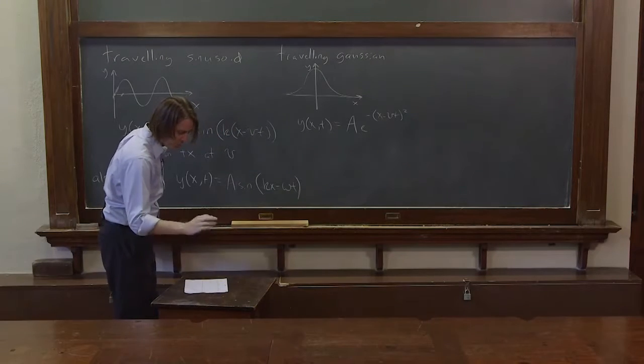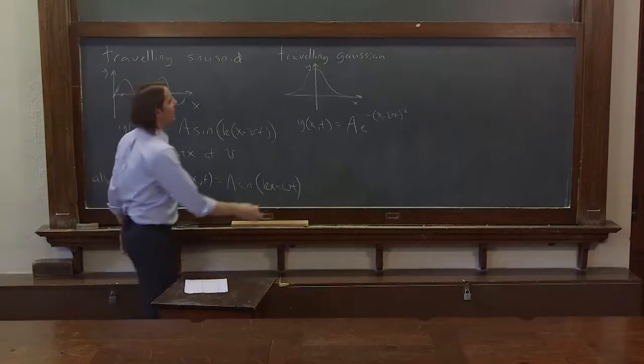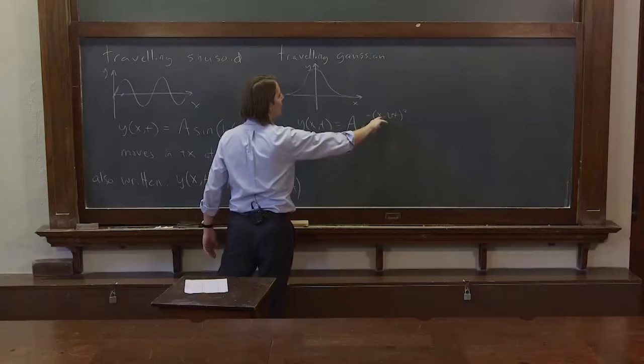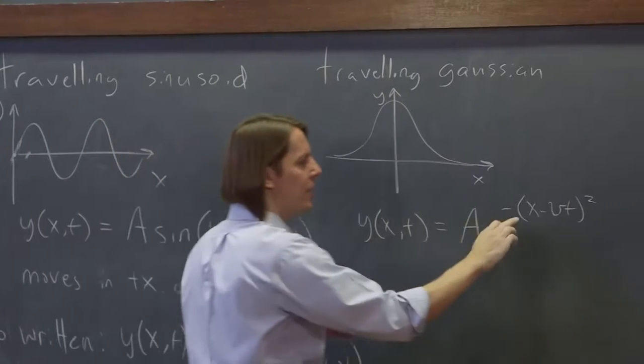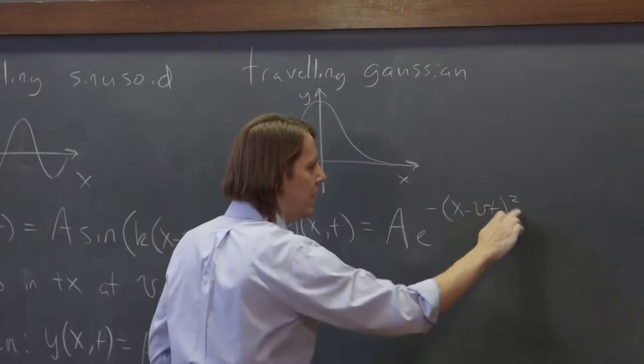And you could add more constants if you want, but we don't need to. That's enough. So a being the height, and then notice it's not x squared minus vt squared. It has to be in the form x minus vt always. So it's quantity x minus vt squared.